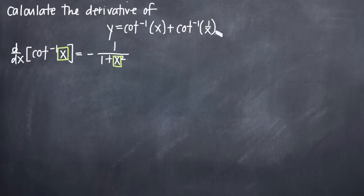when we have 1 divided by x inside of our arc cotangent function, that means that in our formula, we're going to put 1 divided by x in place of x here. So let's go ahead and take the derivative and see what this looks like.